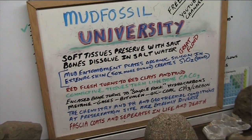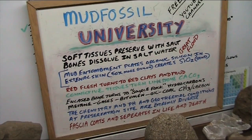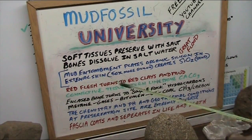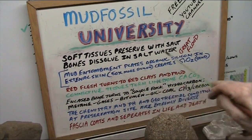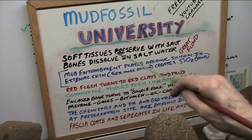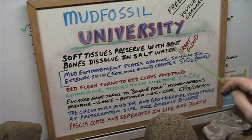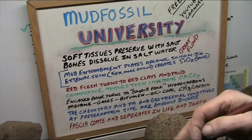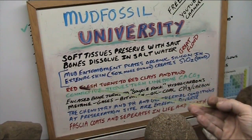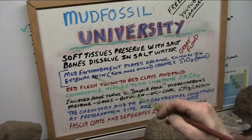Bones are sequestered — they're separated from everything else by a membrane in the body that keeps them out of the salt water solutions. When you die, the membrane doesn't do the job anymore. So bones go away. And when they're encased in mud, it's a different story — they turn into source rock. We'll talk about that in a minute.